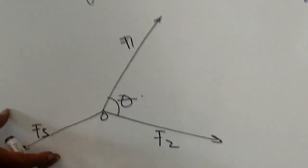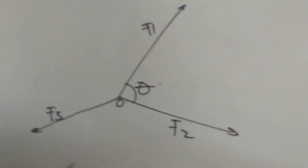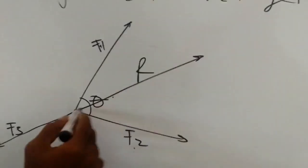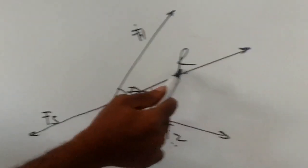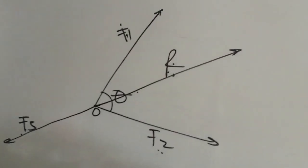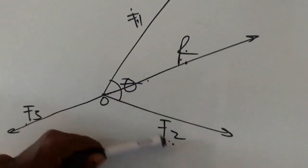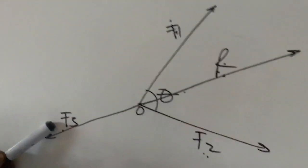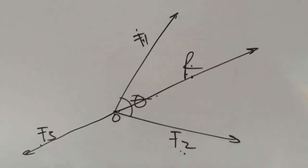Let's consider F3 to be the equilibrant of F1 and F2. You know that from a vector diagram, when two forces are combined, the resultant is drawn at their point of intersection. So the resultant of F1 and F2 is R. Now the resultant R is equivalent to F3. The equilibrant and the resultant are equal, but they act in opposite directions. So F1 and F2 are forces acting at angle theta, where R is the resultant and F3 is the equilibrant. The equilibrant force and the resultant force are always equal but act in the opposite direction.